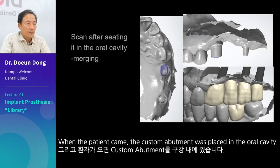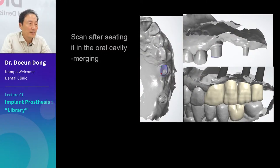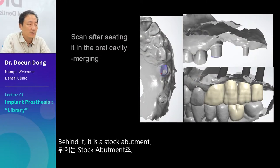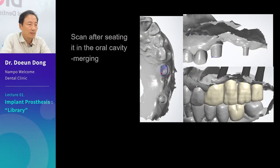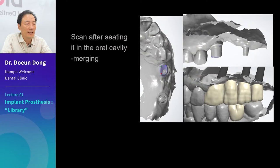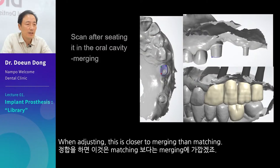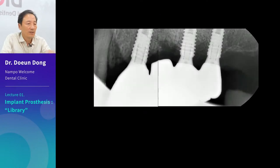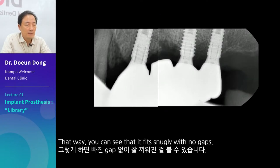When the patient came, the custom abutment was placed in the oral cavity. Behind it is a stock abutment. It can just be scanned while worn. When adjusting, this is closer to merging than matching. That way you can see that it fits snugly with no gaps.